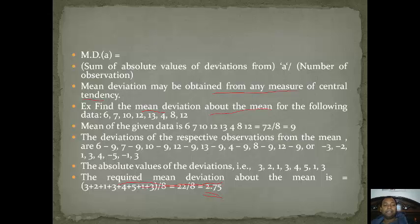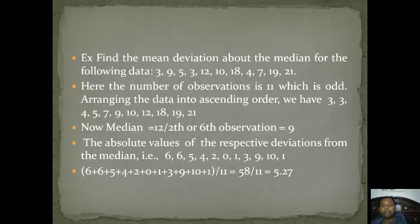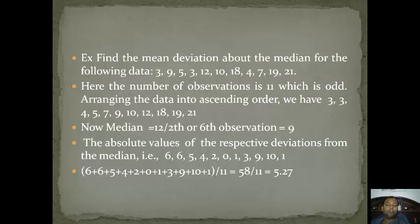Now the second part: mean deviation about the median for the following data. For calculating the median, first we arrange the data in ascending order, giving: 3, 3, 4, 5, 7, 9, 10 and so on. Since there are 11 digits total (an odd number), the median position is (11+1)/2 = 6th observation. The 6th observation is 9, so 9 is the median. We then subtract each data value from 9: 3−9, 9−9, 5−9, and so on.